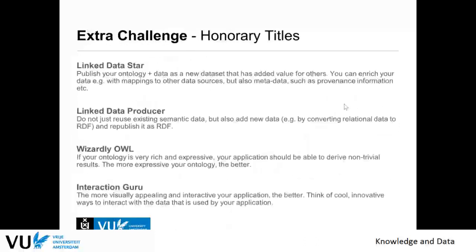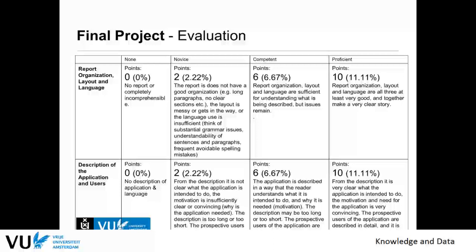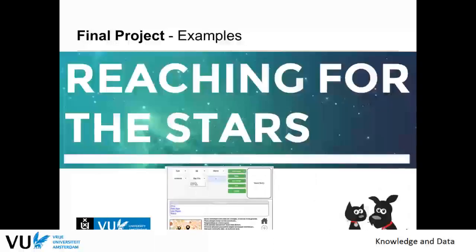So those were the rubrics and the evaluation of your final project. I'll show some examples of final projects from previous years — the final reports — to give insights into how to properly report on your application and some examples of nice application designs. I'll use three projects: Reaching for the Stars, one about living in different cities, and one about a platform for pets.